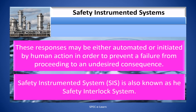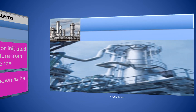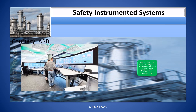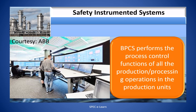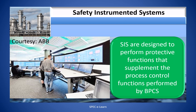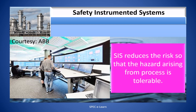Safety Instrumented System is also known as Safety Interlock System. Process plants are operated in automatic process control mode using the Basic Process Control System, BPCS, through DCS. BPCS performs the process control functions of all the production and processing operations. SIS is designed to perform protective functions that supplement the process control function performed by the BPCS, reducing the risk so that the hazard arising from the process is tolerable.